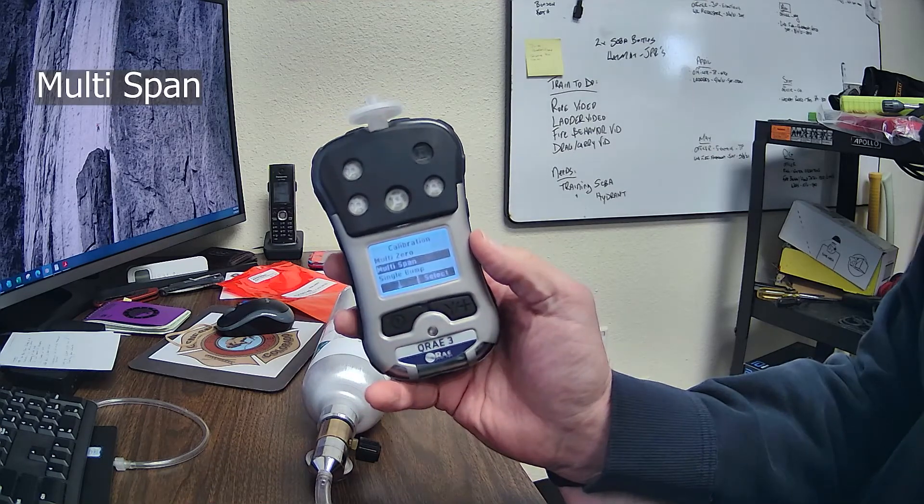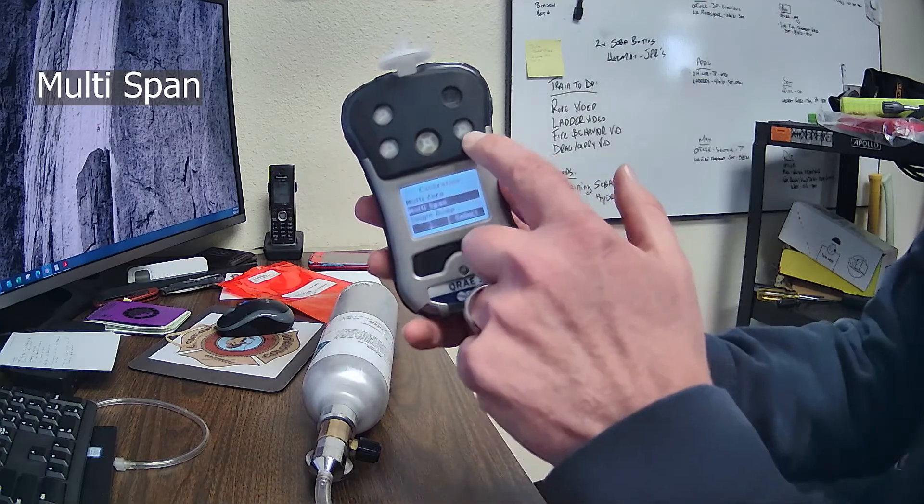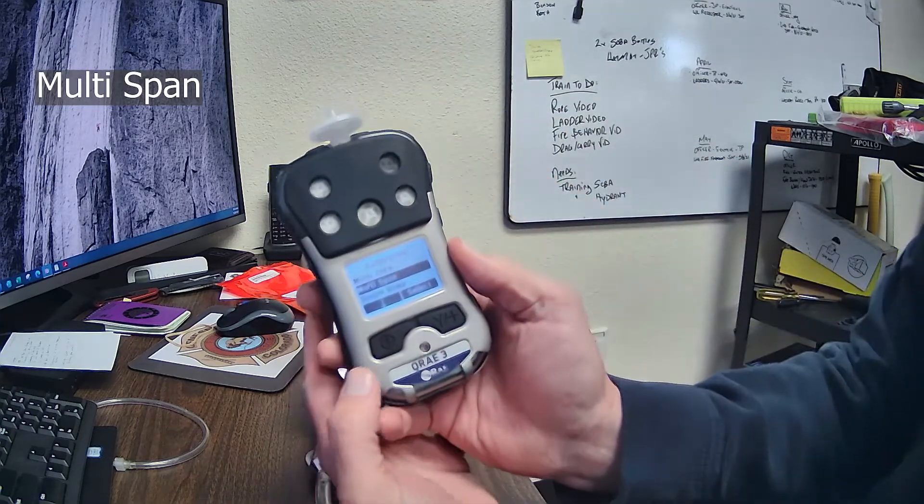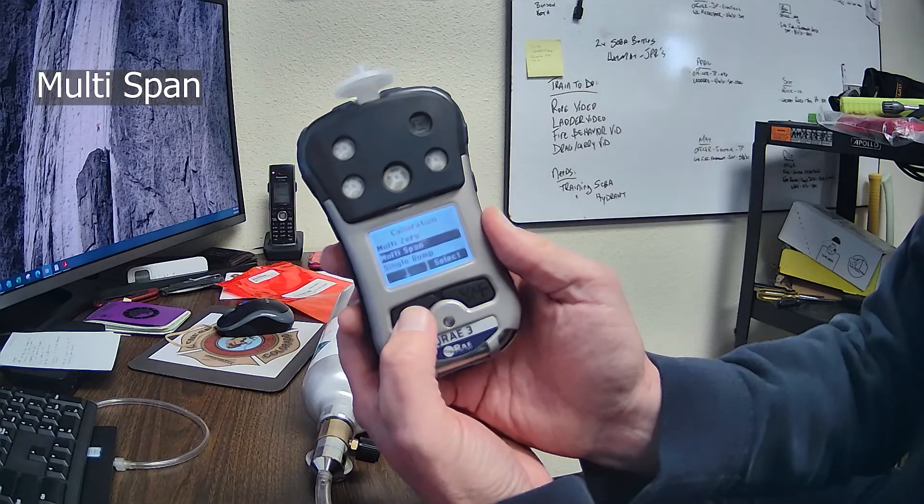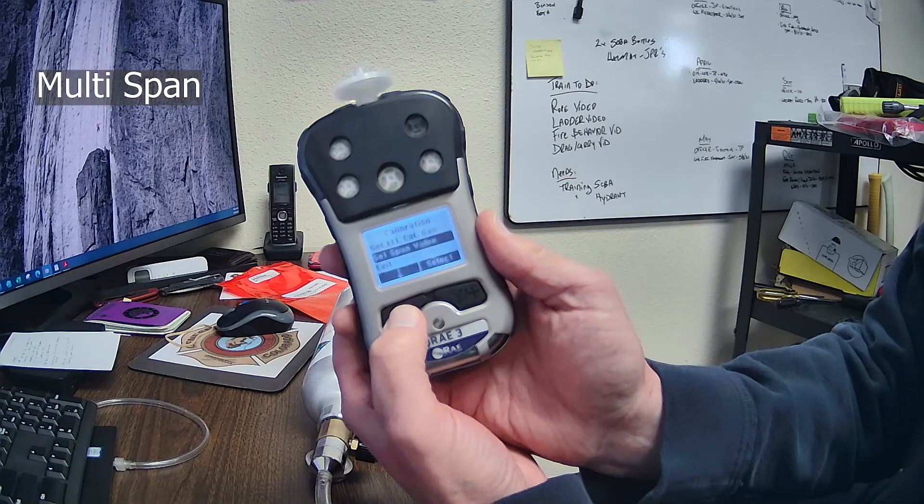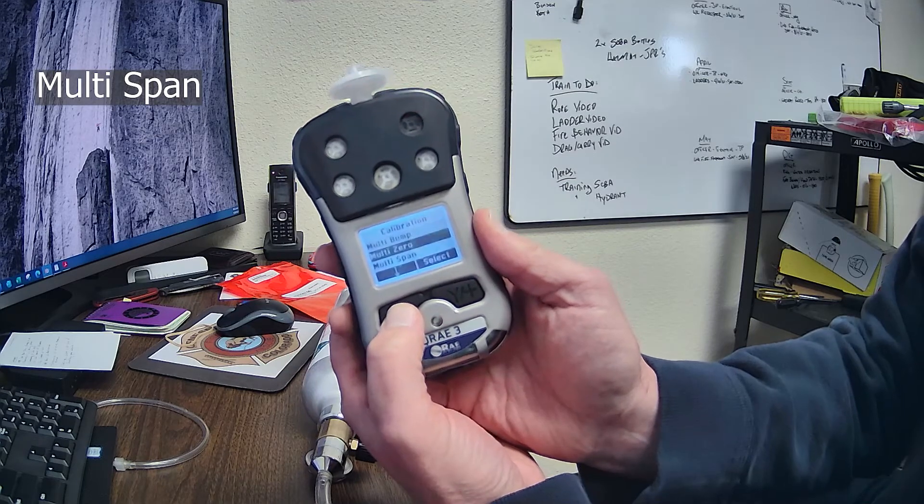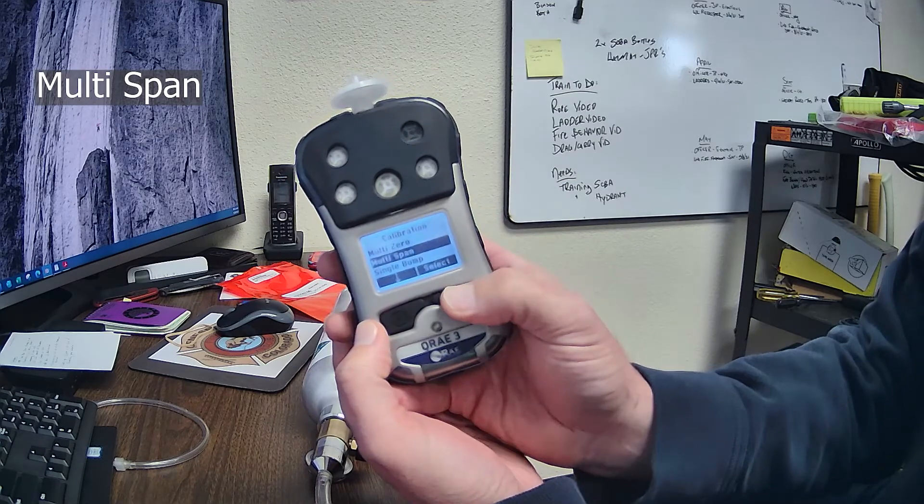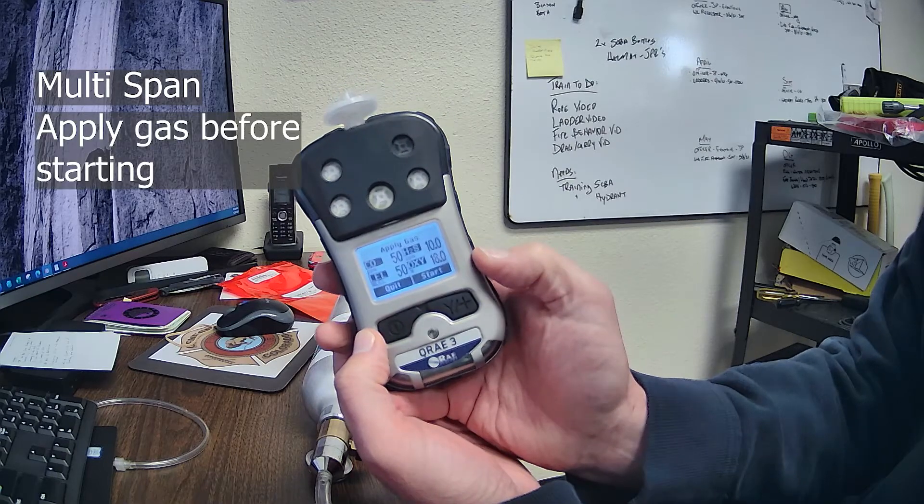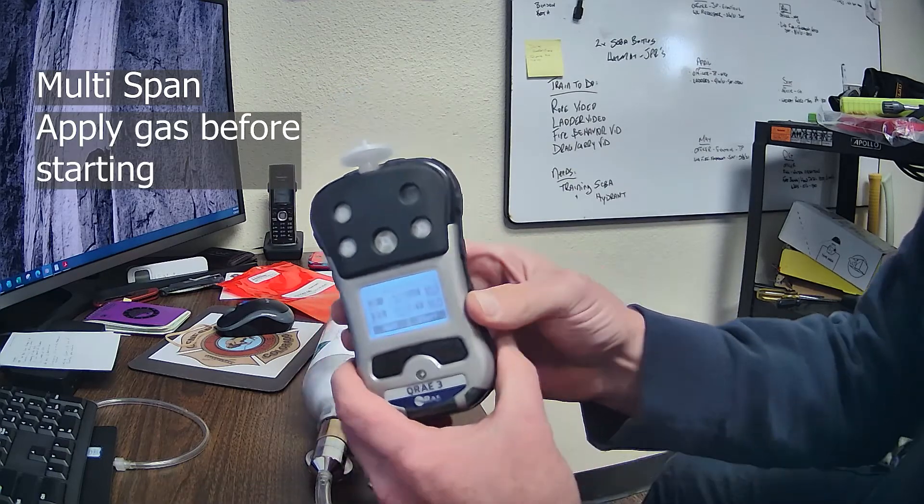We want to do the multi-span, because we have multi-sensors. All these white ones are your sensors. That one, there could be a sensor there, but we don't have it. It's empty. You could also do a single bump, single zero, single span, all these others, but we're not going to do that. We want to do the multi-span, so we're going to hit select, and say, okay, apply the gas.